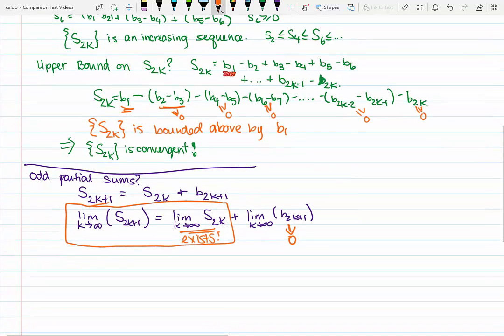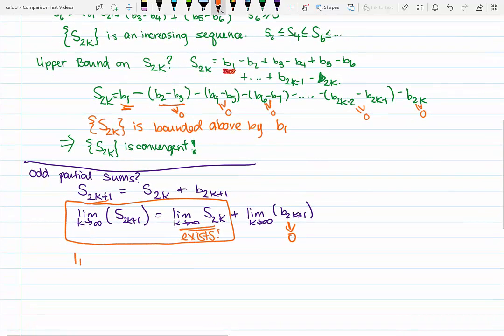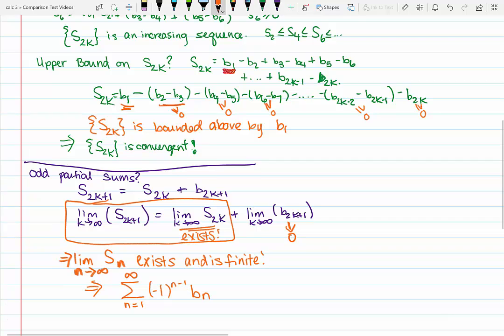So from this we prove that the limit of the partial sums, not sub 2n, just Sn in general, as n goes to infinity, exists and is finite, and therefore that the series, remember the sequence S sub n represented the partial sums of this alternating series, converges. I think it's a really cool result. So that is the proof of the alternating series test.